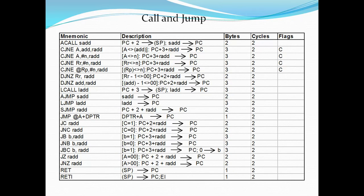This is your complete instruction set from assembly language covering call and CJNE. These instructions you can use for all conditions. Whenever you are trying to write conditions in assembly language from the 8051 controller, you need to use this instruction set. I will explain one by one.